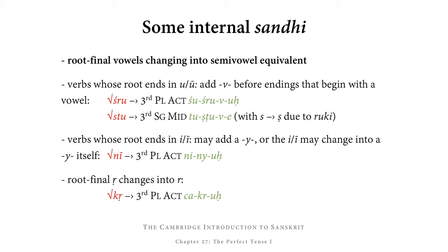In perfect forms we also find some internal sandhi, and this mostly concerns root-final vowels, which change into their semivowel equivalent if followed by an ending that begins with a vowel. Verbs whose root ends in u or ū add a v before endings that begin with a vowel. For example, of śru 'to hear,' we have the third plural active form śuśruvuḥ — śu is the reduplicative syllable, śru is the root in zero grade, uḥ is the ending, and v is added in between the root and the ending.